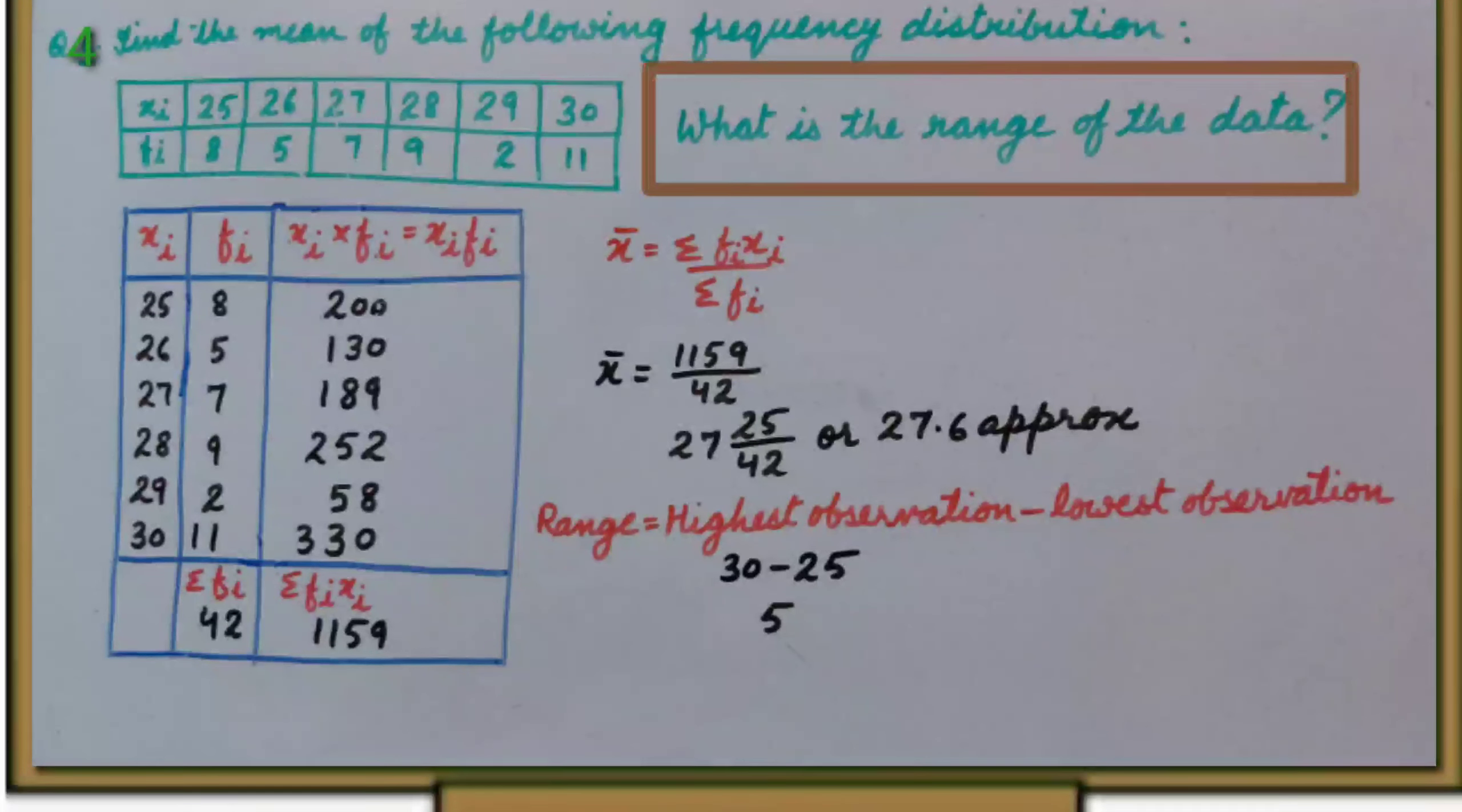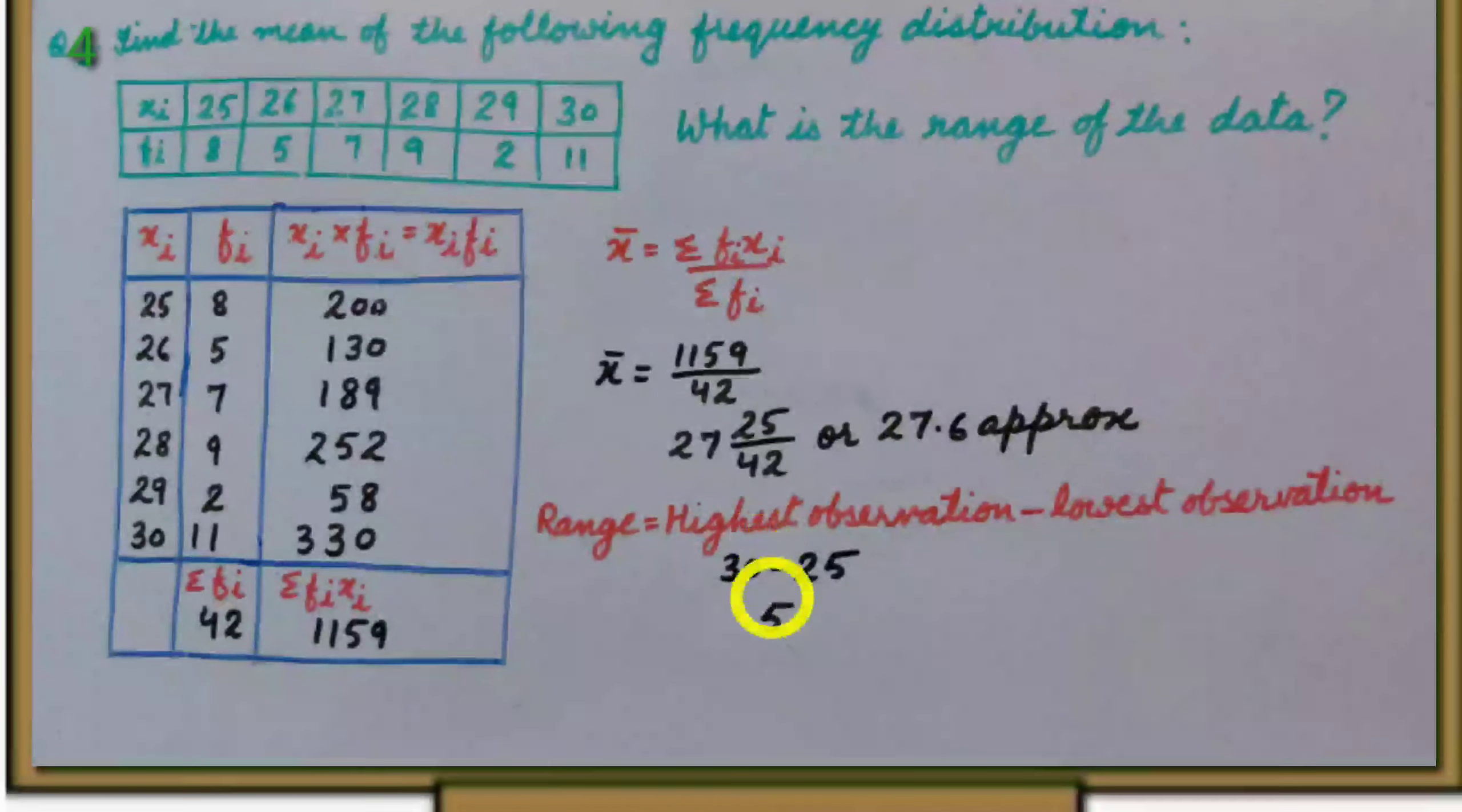Also, we need to find range of the data. Range is highest observation minus lowest observation that is 30 minus 25. It is 5.